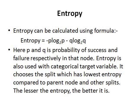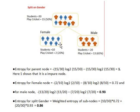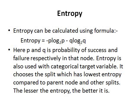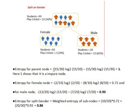Let's calculate entropy for the same example. We have 30 total students, 10 female and 20 male. For the parent node, 15 out of 30 students play cricket, so p = 15/30. Using the formula: −(15/30)·log₂(15/30) − (15/30)·log₂(15/30) = 1. Our parent node entropy is 1, meaning the node is impure, so we need to split it.